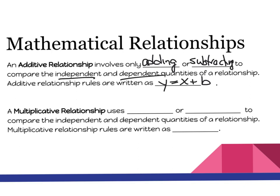Now, independent and dependent variables — we're going to be talking about them during the examples. But remember: the independent variable is your input, and the dependent variable is your output. You've actually heard of input and output relationships because you've done tables in fifth grade, so hopefully you remember those.